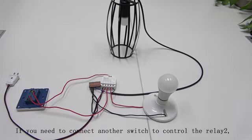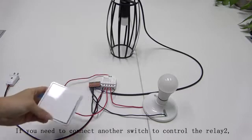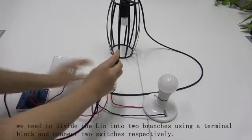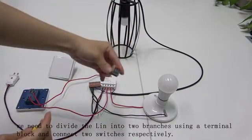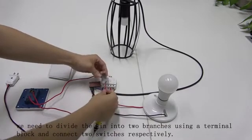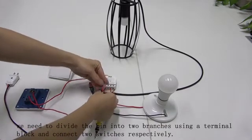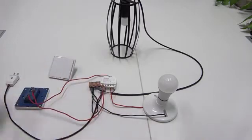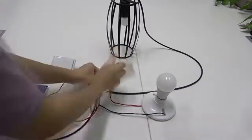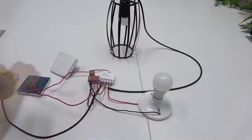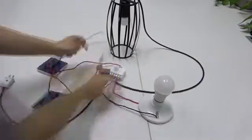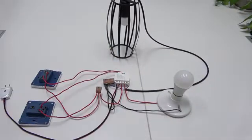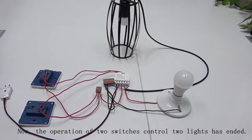If you need to connect another switch to control the relay L-OUT2, we need to divide the L-In into two branches using a terminal block, and then connect two switches respectively. Now, the operation of two switches control two lights has ended.